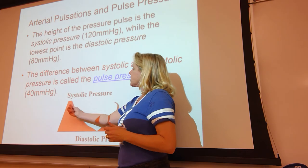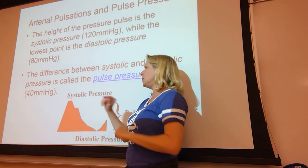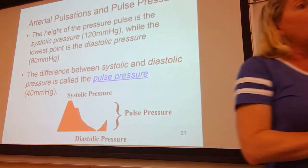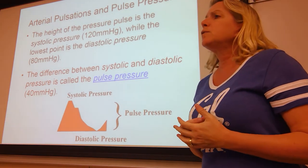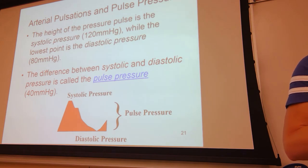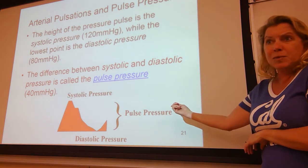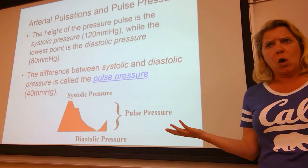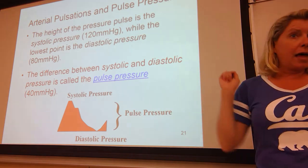When the heart contracts we have higher pressure; when your heart relaxes, that's your diastolic pressure. I can subtract diastolic from systolic to get pulse pressure. You will not be asked to calculate pulse pressure on next week's exam, but on lab exam two, yes. It's simple subtraction — if systolic is 120 and diastolic is 80, pulse pressure is 40. That should be an easy point on lab exam two.